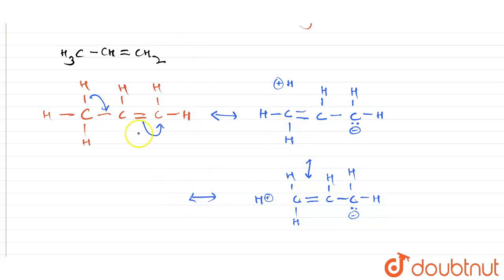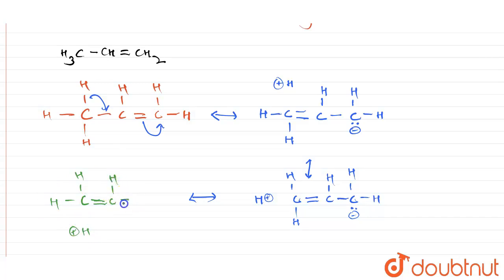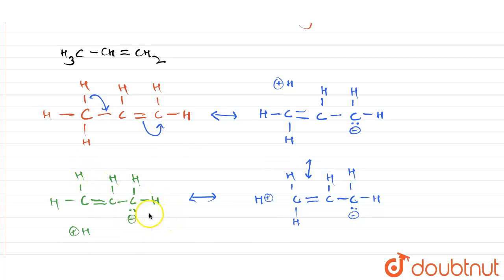Again, from this structure, another hydrogen can break and form a double bond, giving yet another hyperconjugation structure — C with H, H, H and H positive, followed by a double bond and then CH₂. These are the hyperconjugating structures seen in a propene molecule.